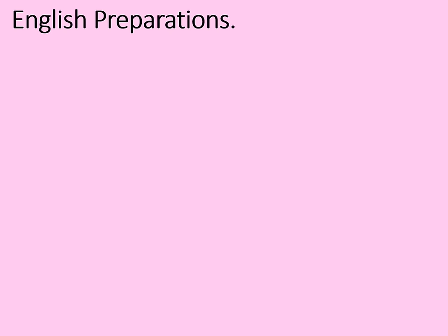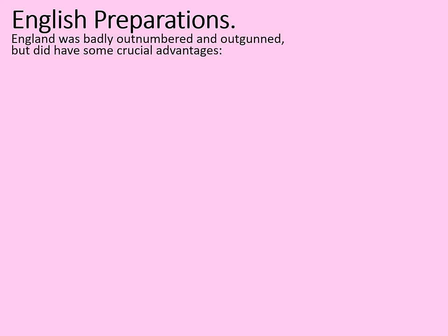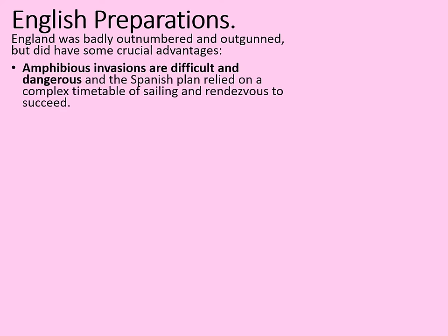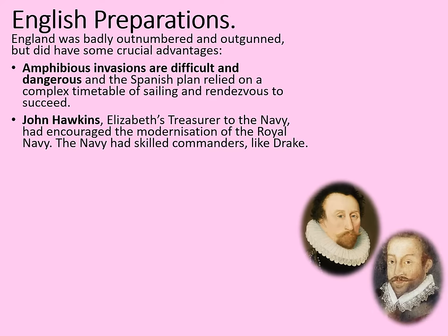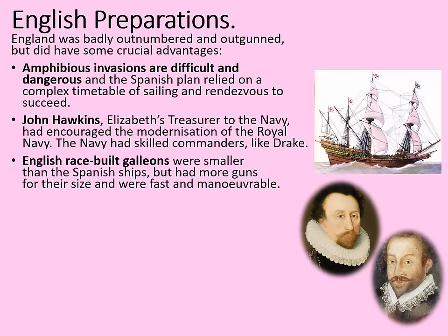The English had hardly been hanging around. They may have been outnumbered and outgunned, but they had some crucial advantages. John Hawkins, Elizabeth's treasurer for the Navy, had encouraged the modernisation of the Royal Navy. The Navy also had skilled commanders like Drake. The English had race-built galleons — a special type of warship smaller than Spanish ships but with more guns for their size, and also fast and manoeuvrable. This meant they could often keep out of range of Spanish guns while still doing damage, and avoid being captured or boarded.